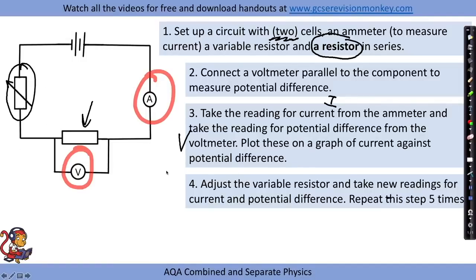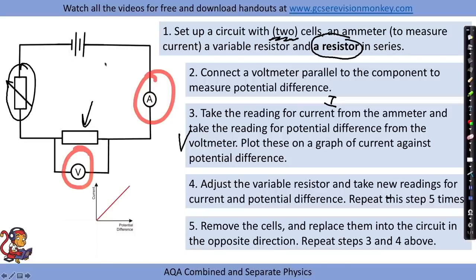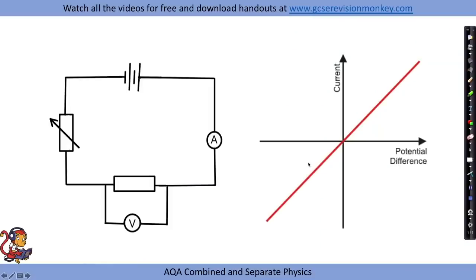Up to this point we can draw the positive region of the graph with a line of best fit. To get the negative region, we reverse the cells in the circuit and repeat the same steps, giving us negative readings from both the voltmeter and ammeter. This completes the IV graph for a resistor at constant temperature, which shows a directly proportional relationship between current and potential difference.